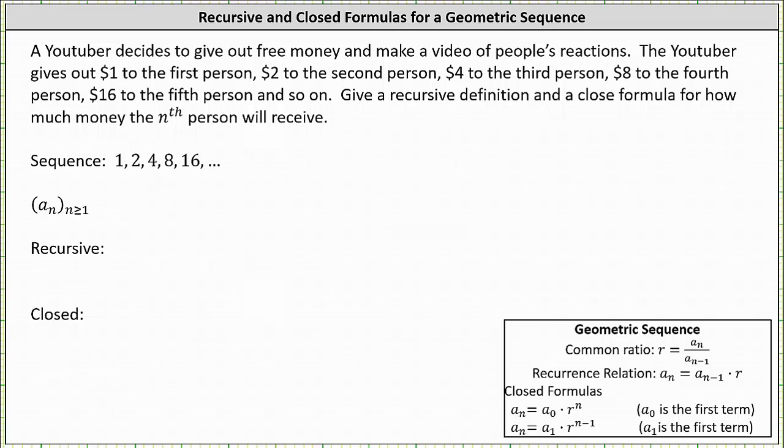We're asked to give a recursive definition and a closed formula for how much money the nth person will receive. Looking at this as a sequence, we know the sequence is 1, 2, 4, 8, 16, and so on.